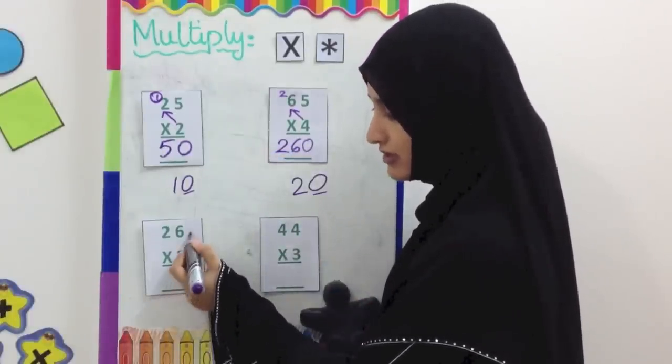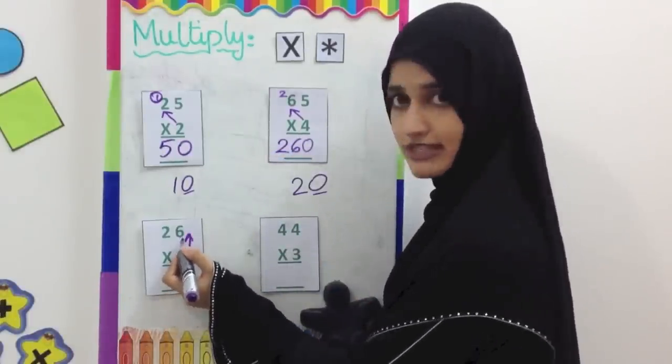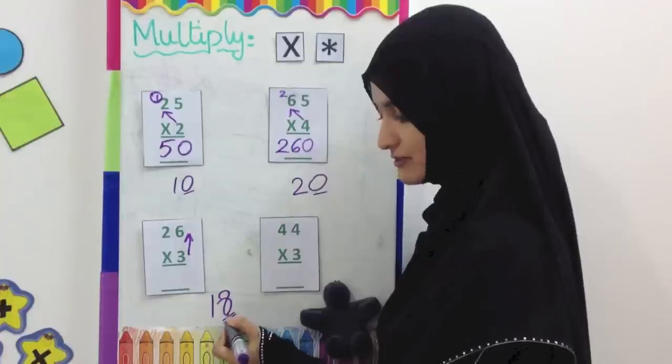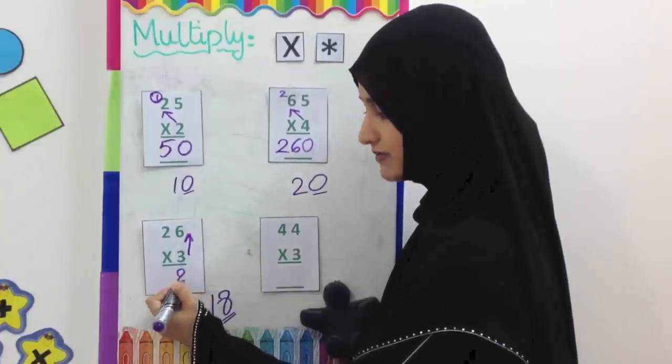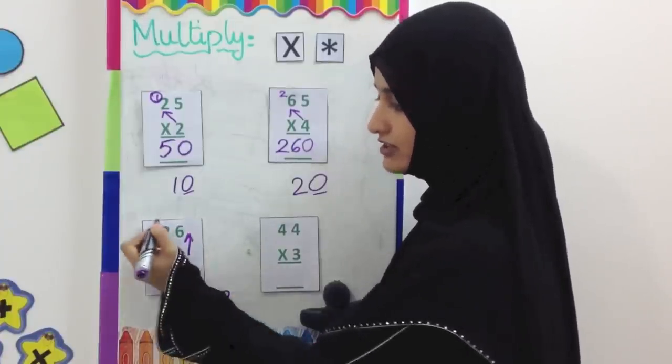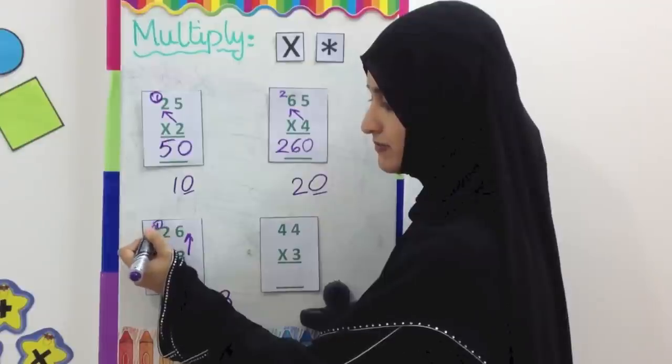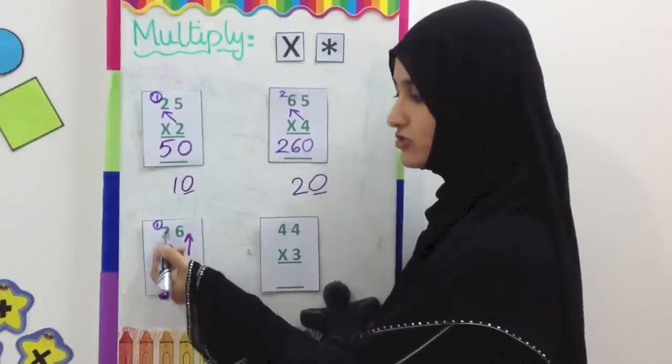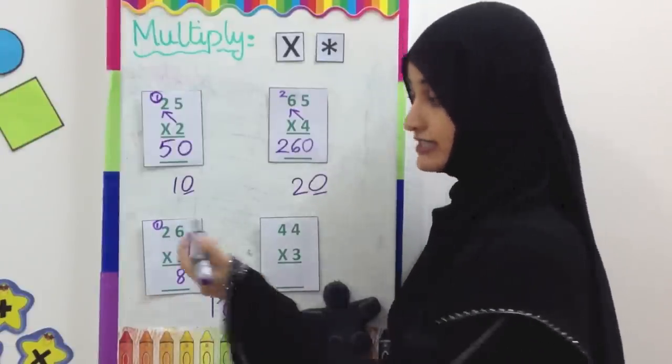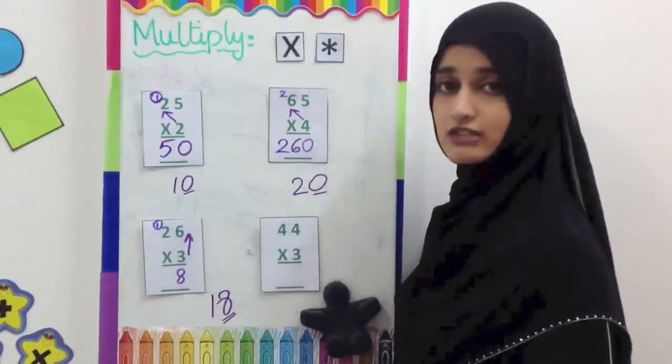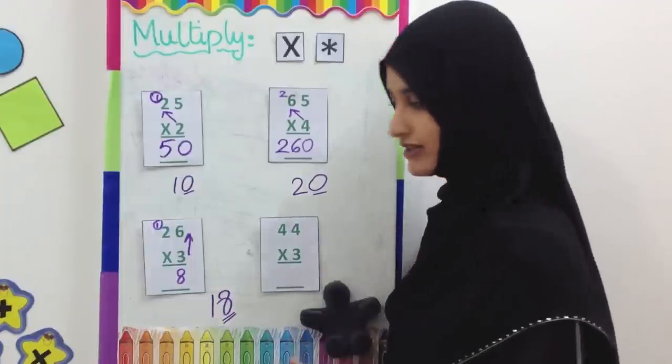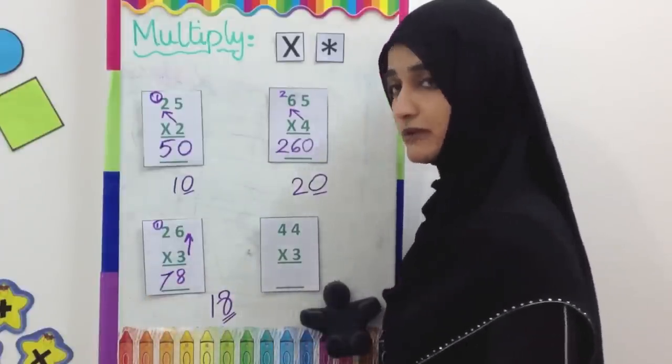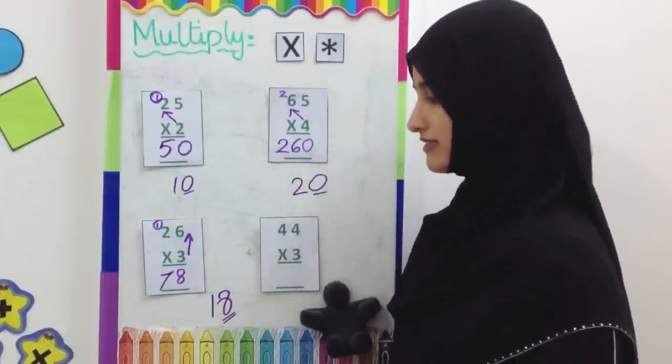First, we multiply the 3 with the 6. 3 6's are 18. The 8 in the units place comes down here in the units place. This one is carried to the 10s. Now we are going to multiply the 3 with the 2 we see here. 3 2's are 6. We see another one here. So it's not 6 anymore, it's 7. The 7 is written like this. So the answer is 78. 26 multiplied by 3 equals 78.